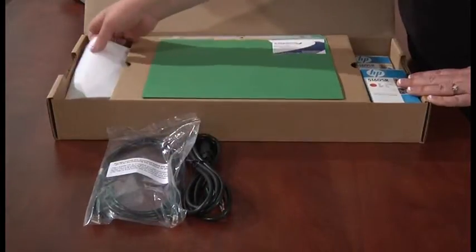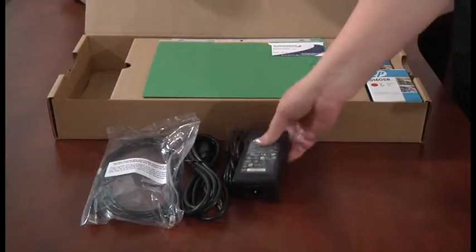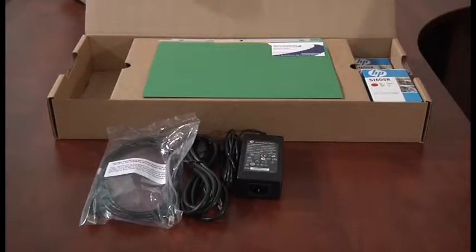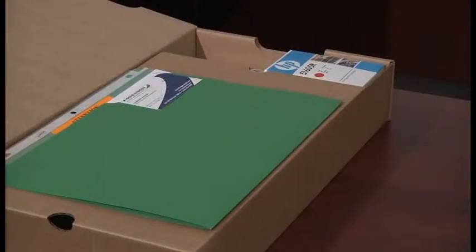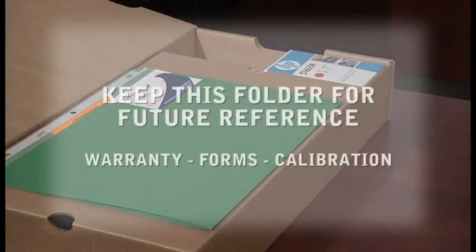In the center of the box is a green folder that contains important information that you will need to keep regarding your scanner. Some of the contents inside the folder might vary slightly depending on whether you are on a 30 day trial or you purchased the machine. The following items will be in every folder regardless of the program.